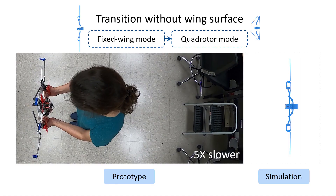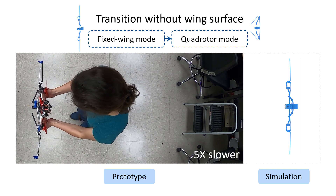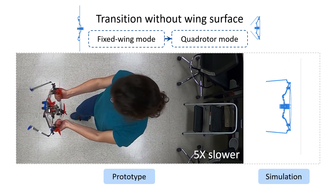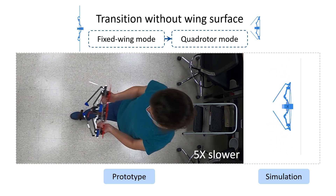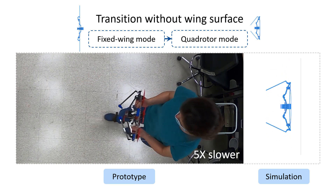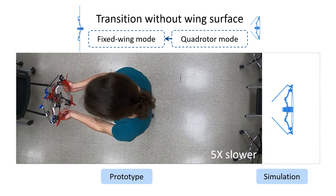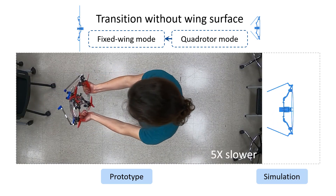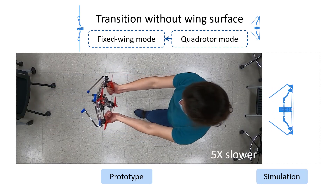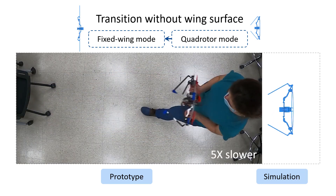We conducted wing tests by applying accelerations to the HAV prototype by hand. The transition from fixed-wing to quadrotor is compared with simulation, and the transition from quadrotor to fixed-wing.